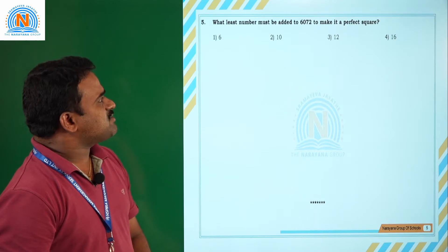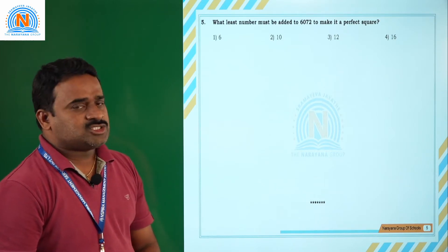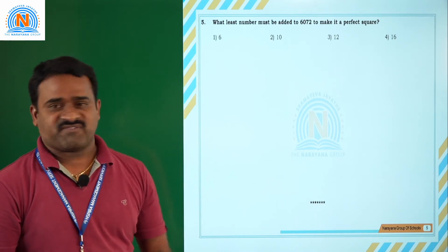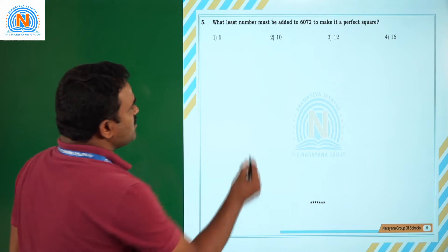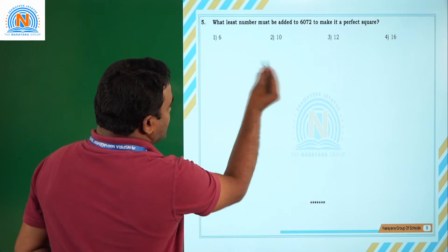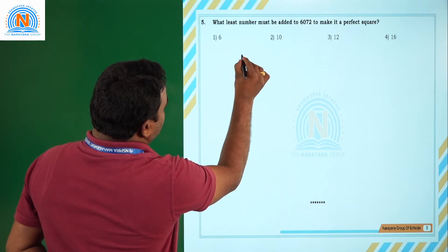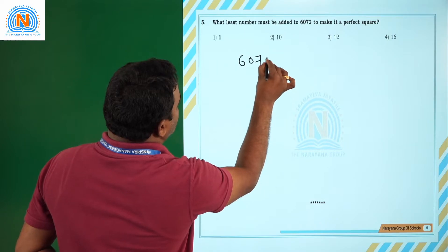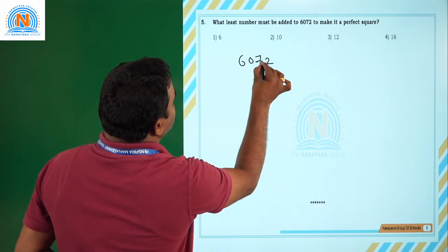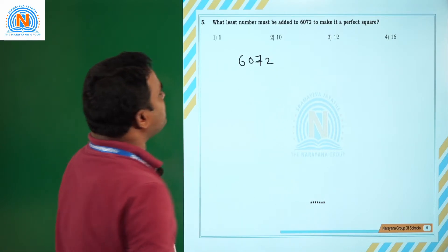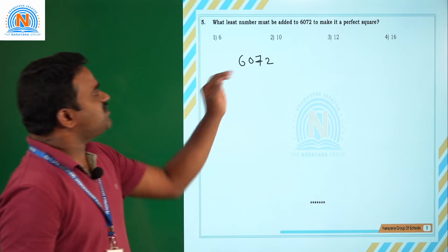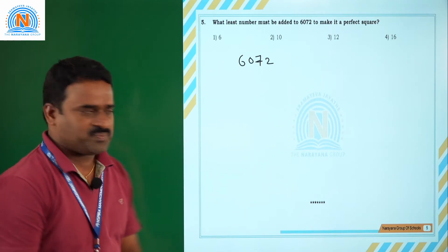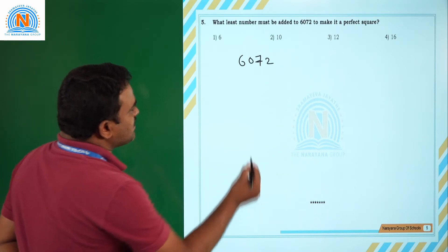Next question: what least number must be added to 6072 to make it a perfect square? We use the long division method on 6072.